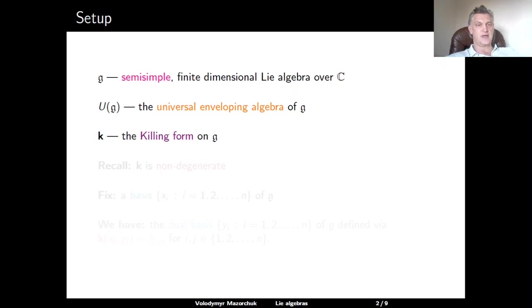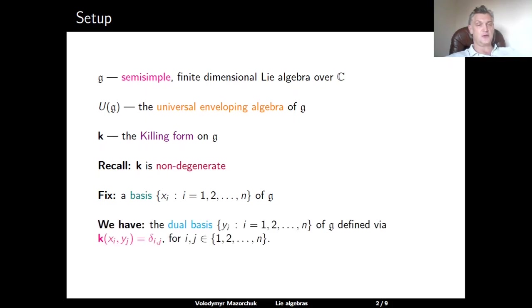Consider the Killing form K on G. This is a symmetric bilinear form, and since G is semi-simple, we know that it is even non-degenerate. Fix some basis of G and let it be x_i, where i runs from 1 to n. Since we have a non-degenerate bilinear form, we automatically have the dual basis in G, which is defined using the requirement that the value of the Killing form at the pair x_i and the element y_j in the dual basis is equal to the Kronecker delta δ_{ij}.